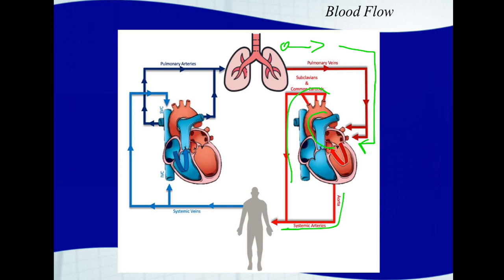After the blood gets to the body, it goes through the capillaries, picks up CO2, and then needs to be brought back to the heart. Deoxygenated blood travels back through the veins, and eventually the inferior and superior vena cava put it into the right atrium. The right atrium receives that deoxygenated blood, sends it down through the tricuspid valve into the right ventricle. The right ventricle then sends that blood through the pulmonary valve into the pulmonary trunk and pulmonary arteries, and back to the lungs to offload CO2 and pick up oxygen — and the process starts again.